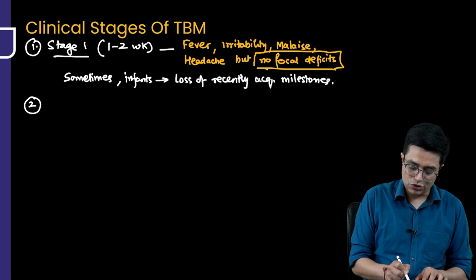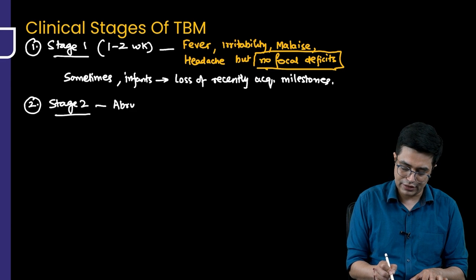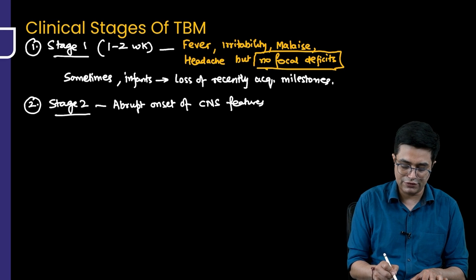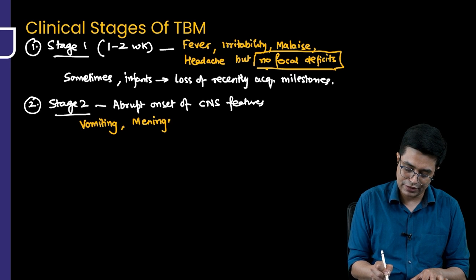Second is stage 2. Stage 2 is the dramatic stage. There will be abrupt onset of CNS features. What are the CNS features which will appear? Acute onset of CNS features will happen in the form of vomiting. There will be meningeal signs developing in the patient. Meningeal signs will become positive.